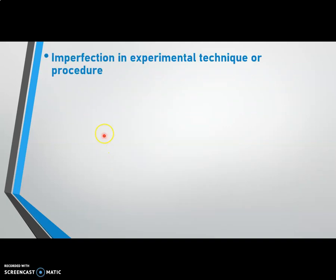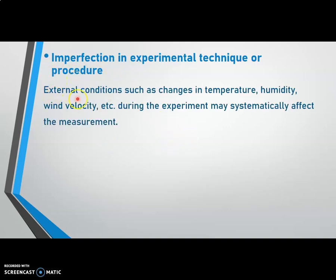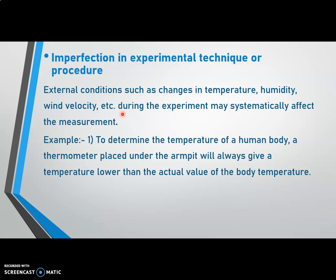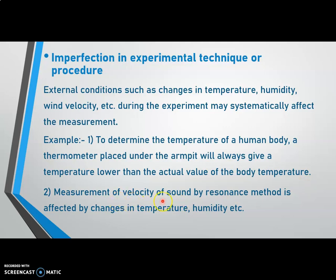Errors also occur due to imperfection in experimental technique or procedure. External conditions such as changes in temperature, humidity, and wind velocity during the experiment may cause systematic error. For example, placing a thermometer under the armpit to determine body temperature gives a reading lower than the actual body temperature. Similarly, measurement of velocity of sound by the resonance method is affected by changes in temperature or humidity. Such errors due to imperfect experimental techniques or procedures are systematic errors.